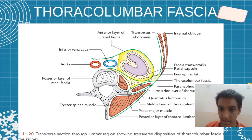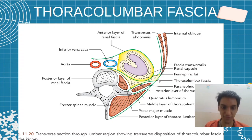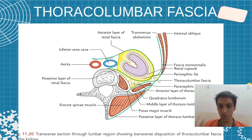Here the internal oblique and transversus abdominus — no external oblique here. This is the fascia transversalis. And this is the actual thoracolumbar fascia. This is what we are seeing.